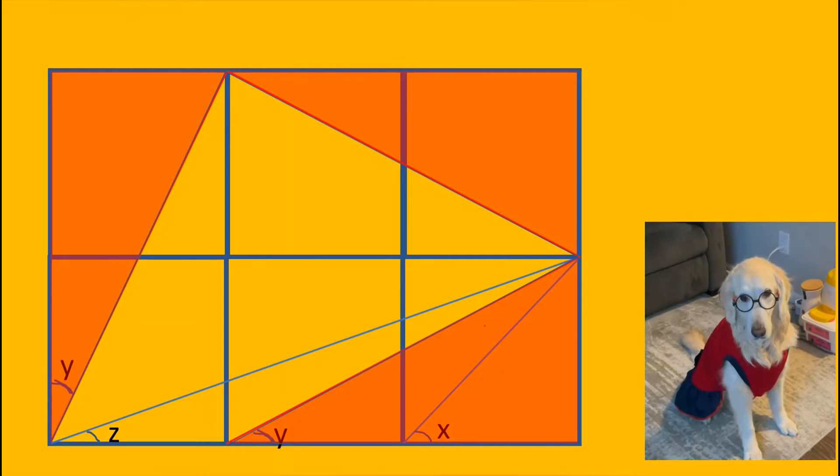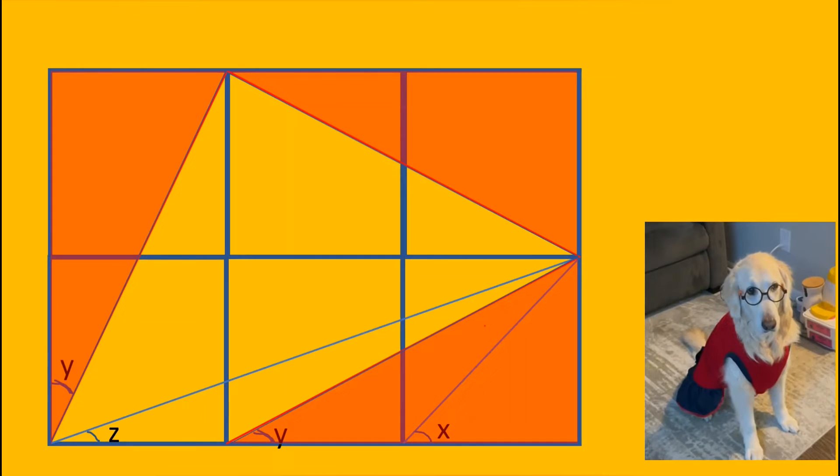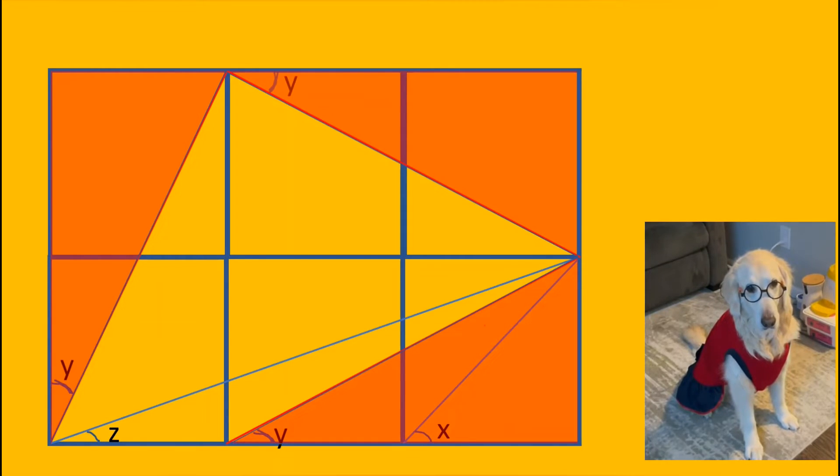This third red triangle and the other two triangles are congruent for the same reason. So, this angle of the third red triangle is equal to y.